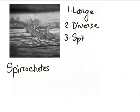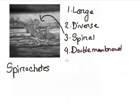The Spirochetes are large diverse group of spiral motile bacteria. They have distinctive double membranes, most of which have long and helically coiled cells.